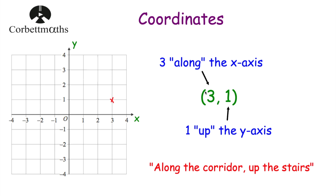So those are coordinates. It's very important that whenever you're writing down coordinates, you include the brackets and also make sure you put a comma in between the two numbers. You've got your brackets, your x-coordinate — the first number that tells us how far along the corridor to go — then the comma, and then the second number is your y-coordinate, which tells us how far up or down the stairs to go.